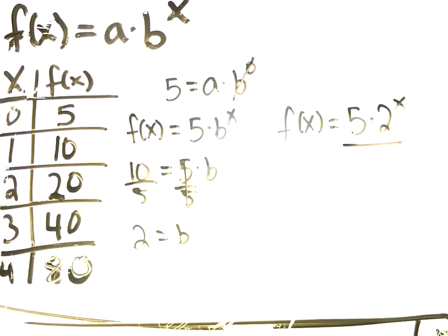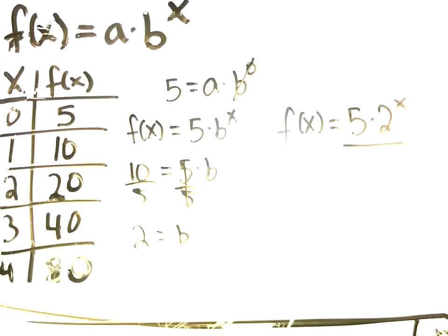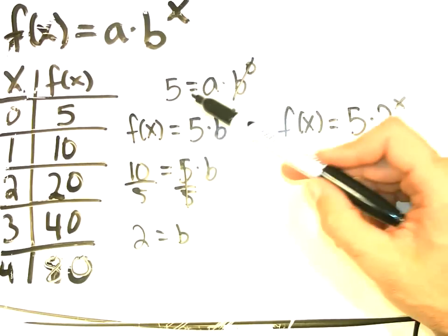Take a moment and think through what each of these steps were. That's right. The first step was I had to plug in a point. I chose the easiest point. Good. What's the next one? That's right. Well, luckily it was B to the 0. That let me just find A out immediately.